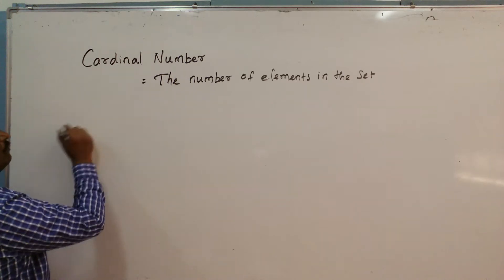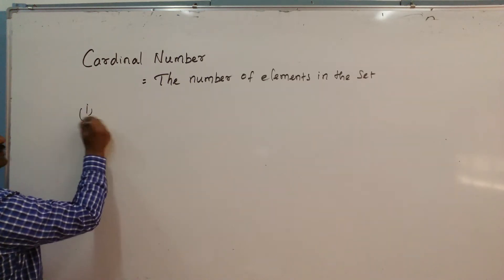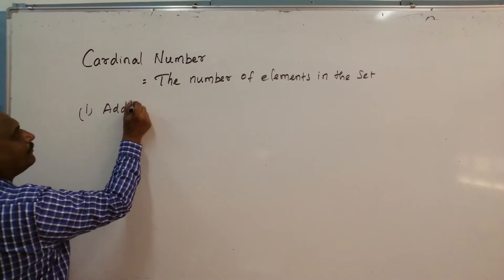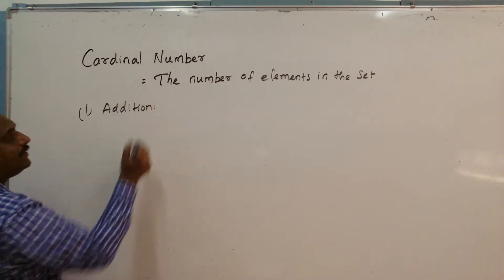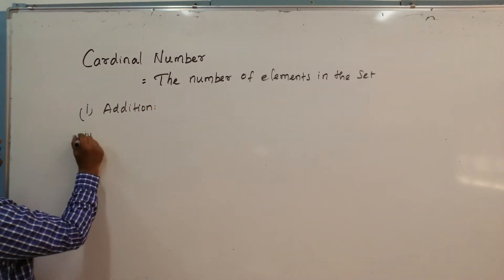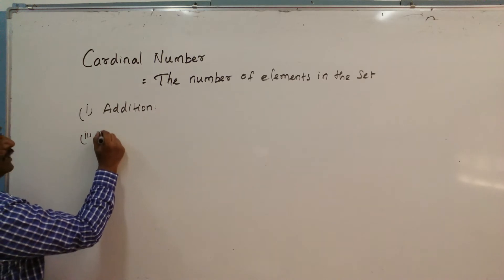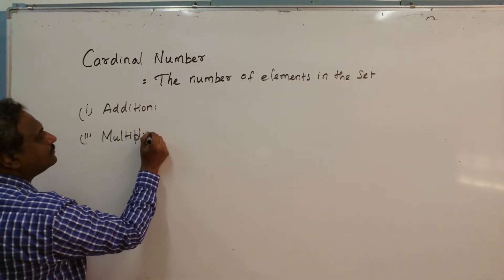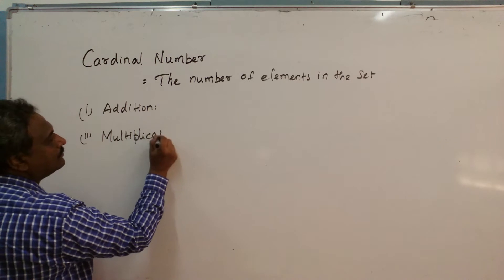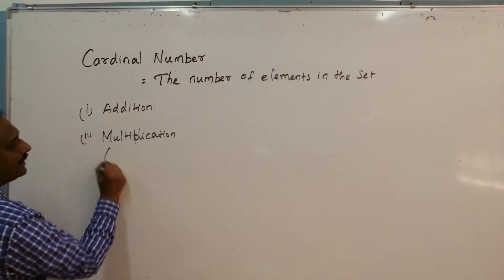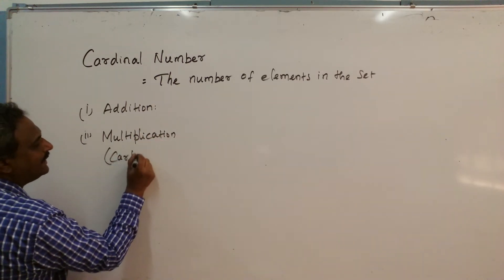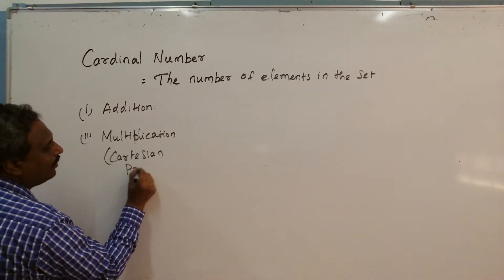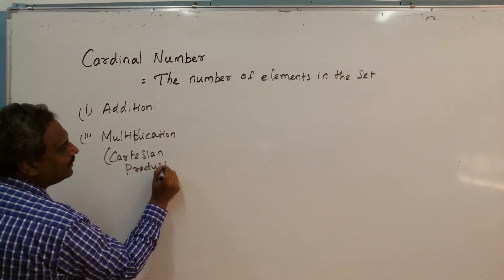We are going to give two rules. The first one is addition and the second one is for multiplication — which we call the Cartesian product.